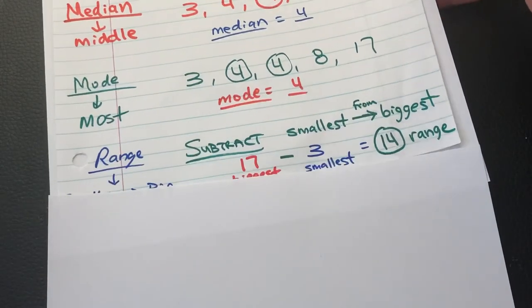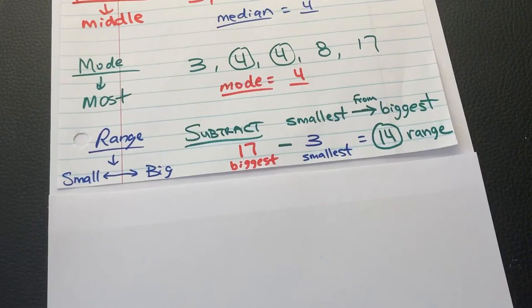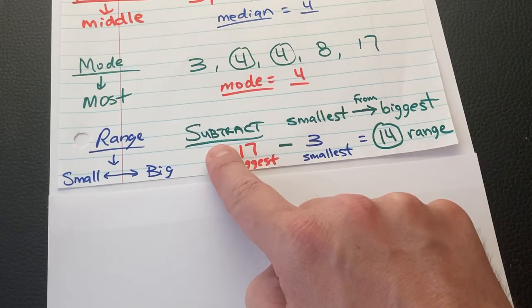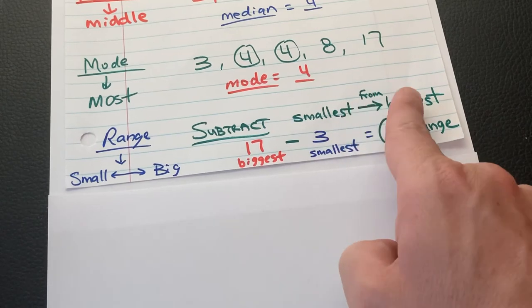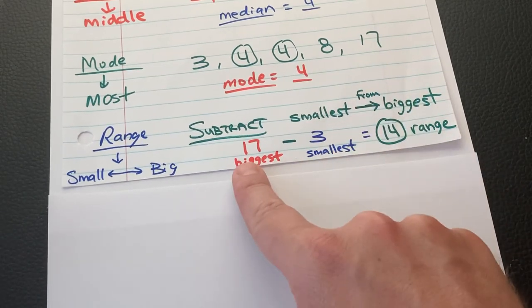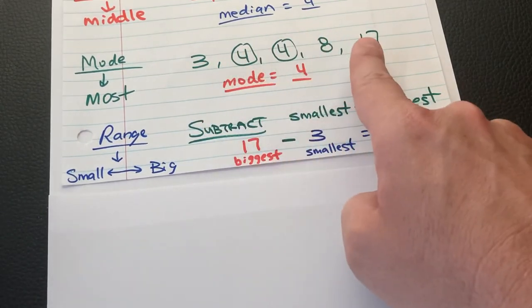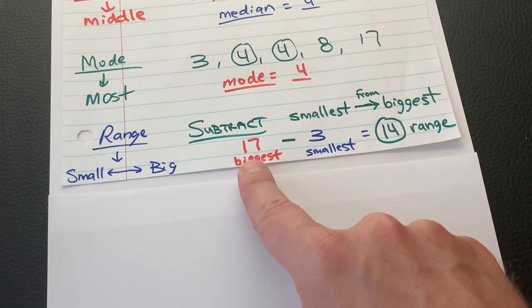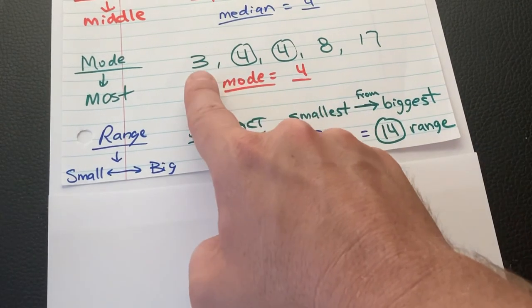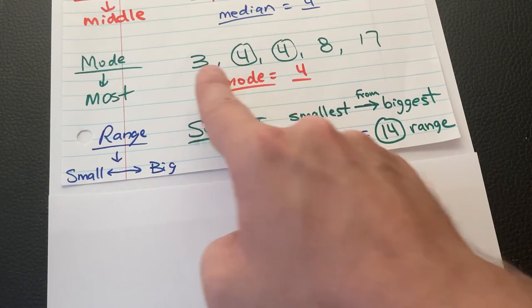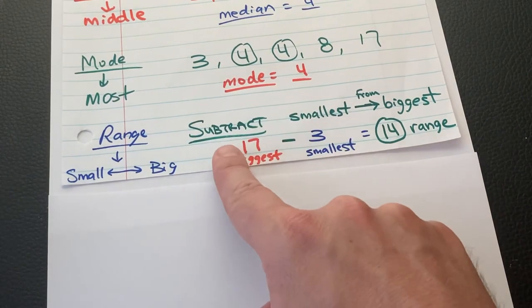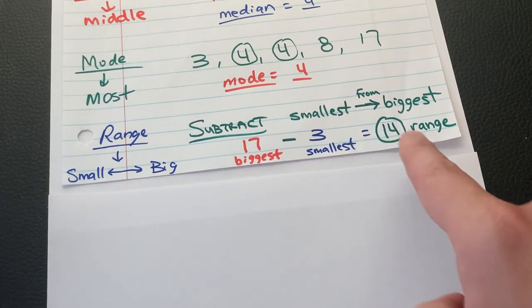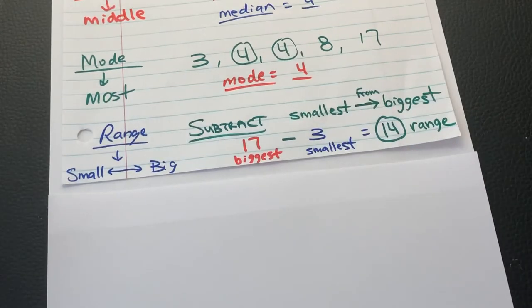And the range. This is the trickiest one, but if you pay attention, I think you can get it. The range is when you subtract the smallest from the biggest. What was our biggest number? So the one on the far right, 17 minus. What's our smallest number? Our least, 3. What's 17 take away 3? 14. That is the range.